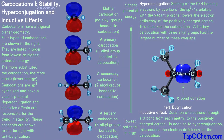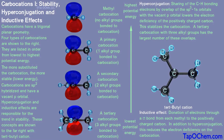For a tertiary carbocation, there are three sigma bonds that can donate electron density, thus making it the lowest energy carbocation of this series.